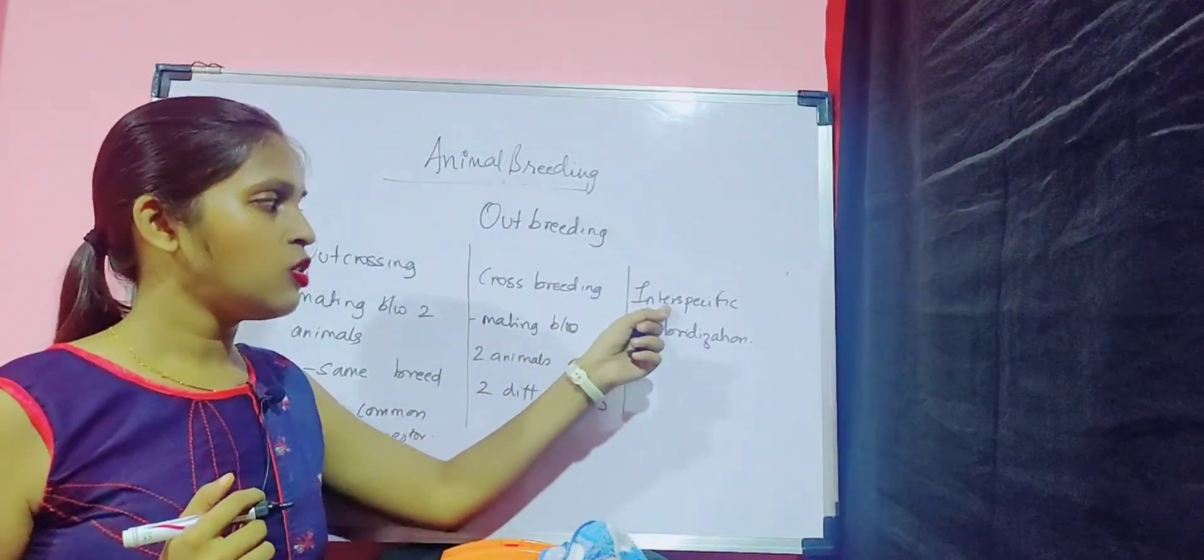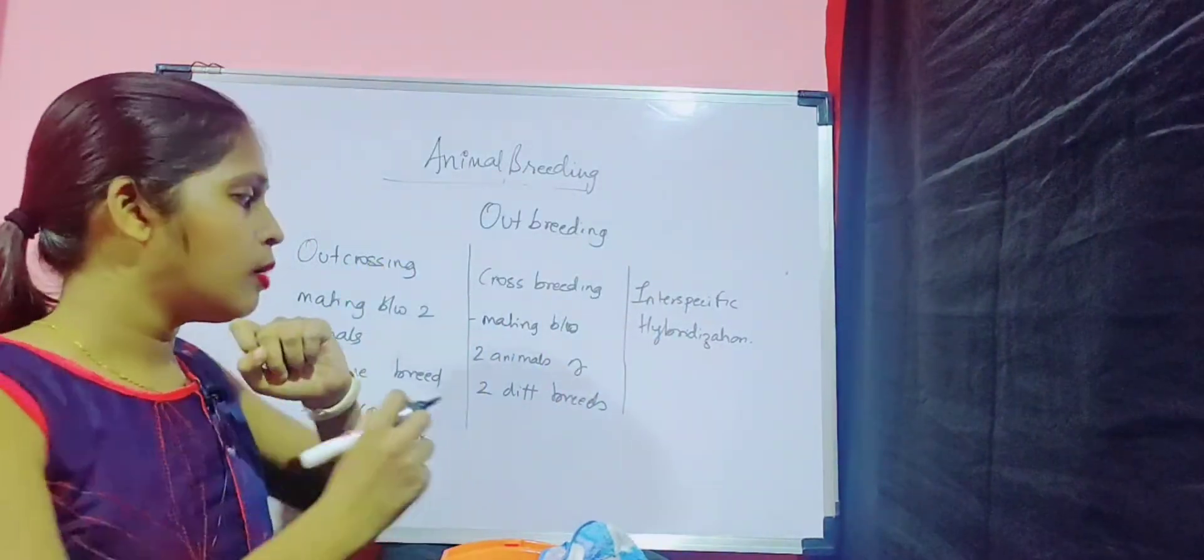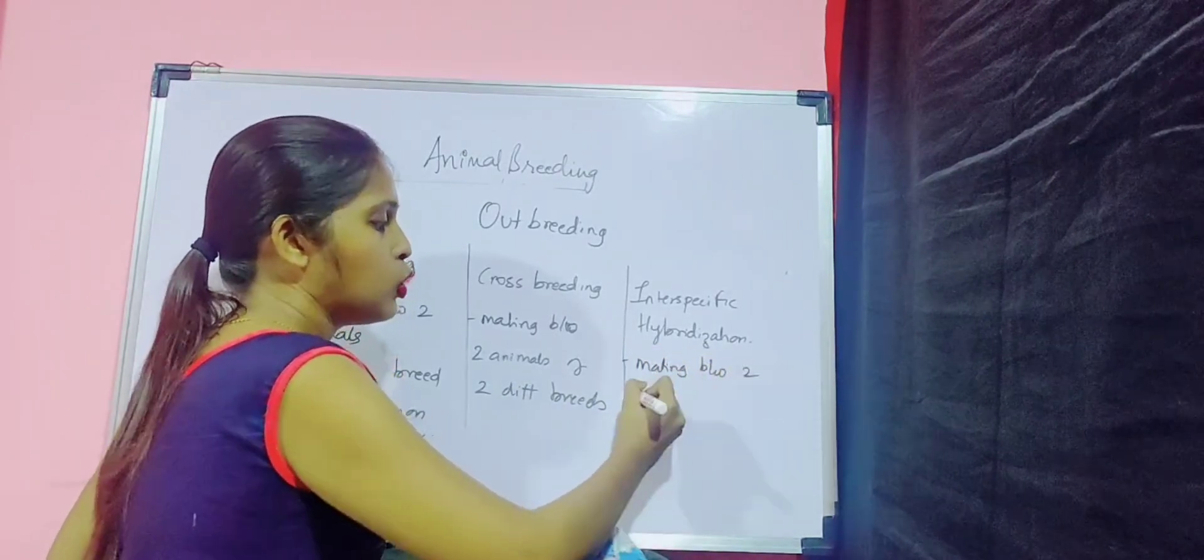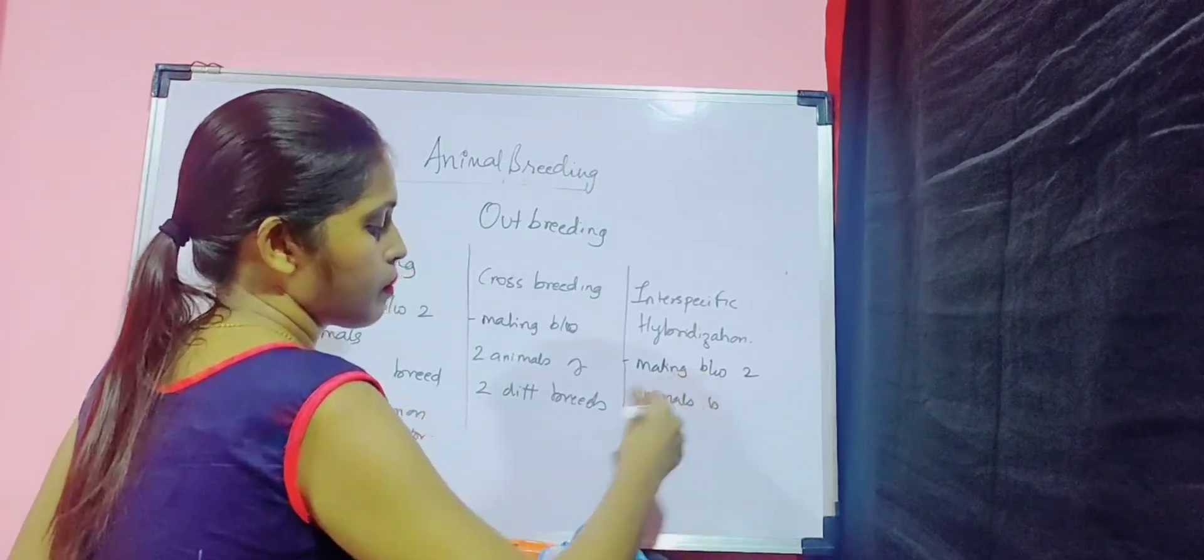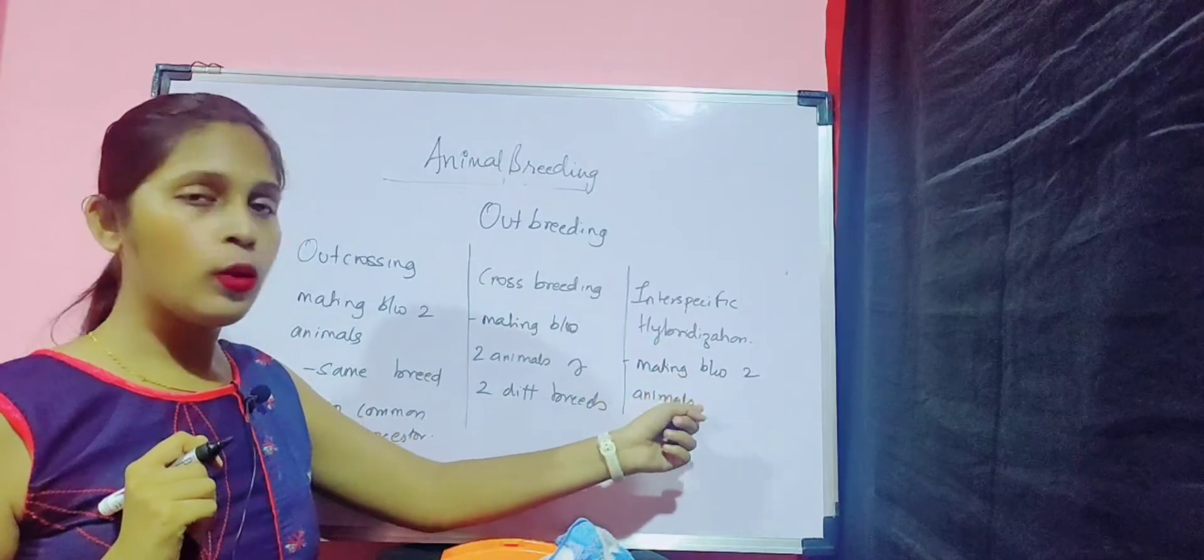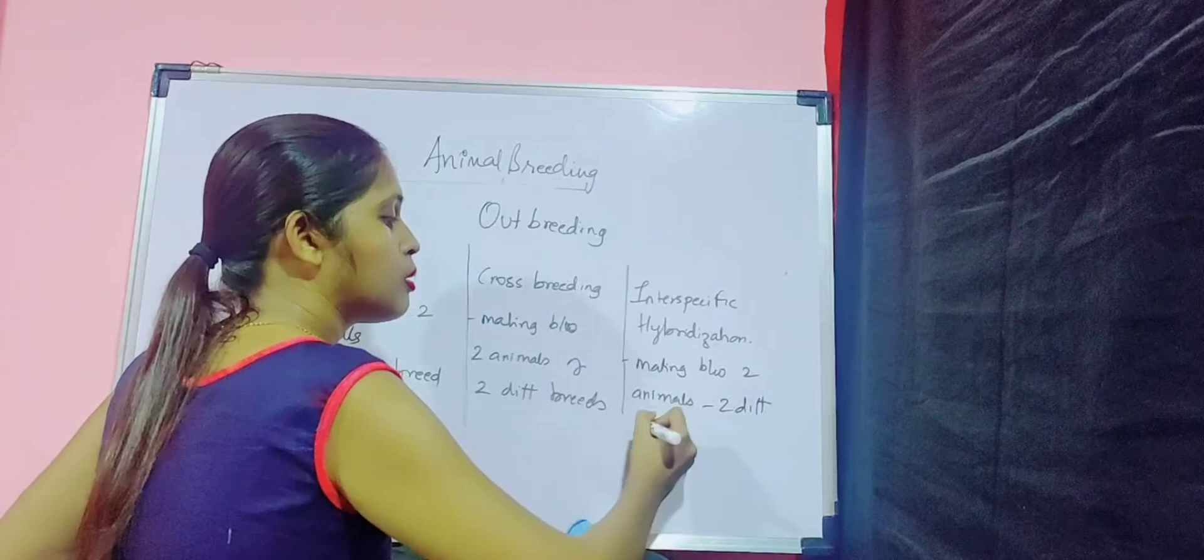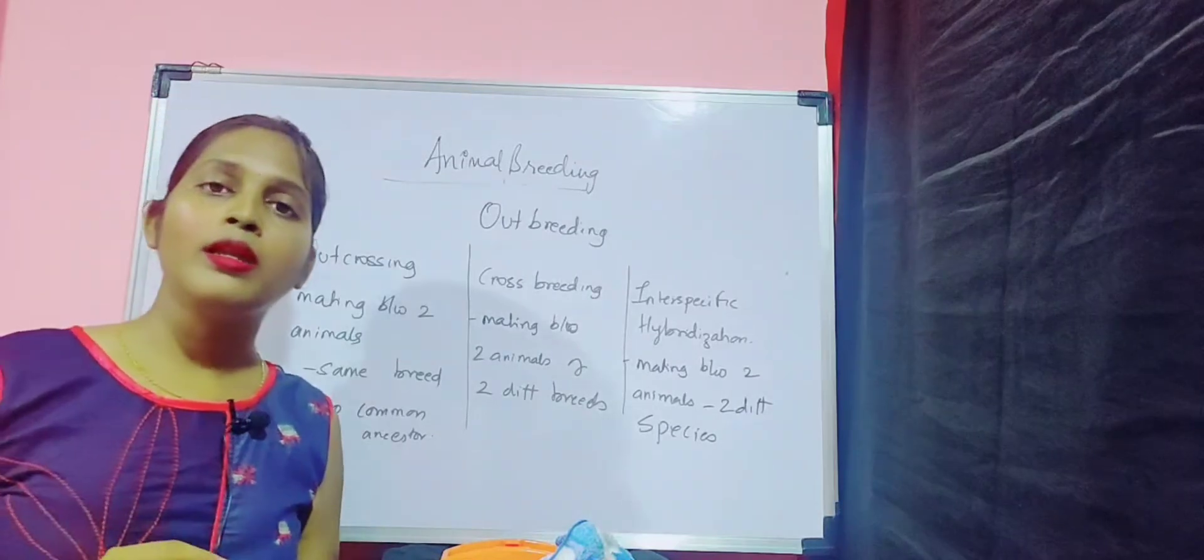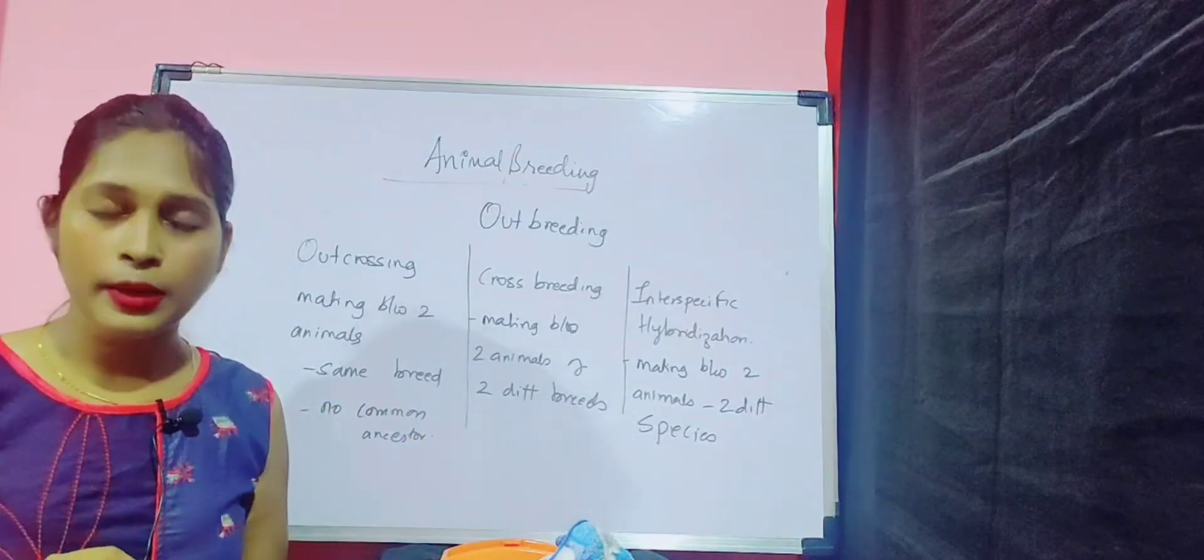Interspecific hybridization. Interspecific, this term specific it relates with the species. So if the mating between two animals is done, interspecific hybridization means mating between two animals belonging to two different species. So this is altogether a different track. So if there is mating between two different species, that will be an interspecific hybridization.